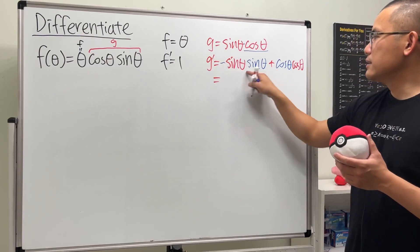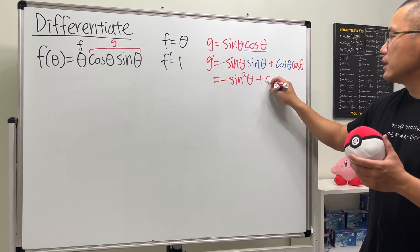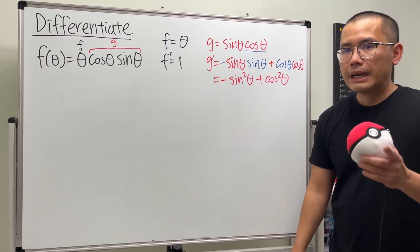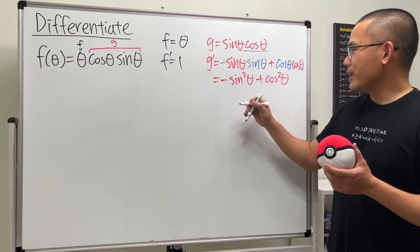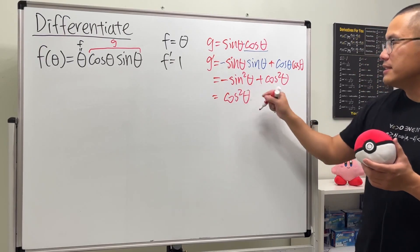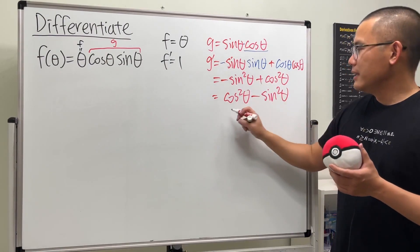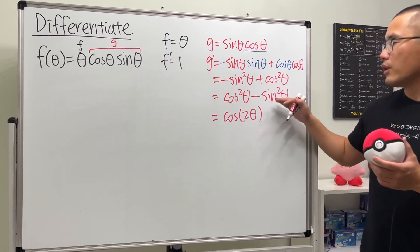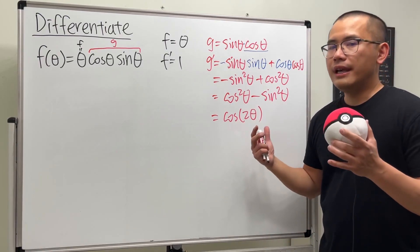We can simplify a little bit before multiplying. This gives us negative sine squared theta plus cosine squared theta. There's actually an identity for this: cosine squared theta minus sine squared theta equals cosine of 2 theta — that's the double angle identity for cosine.